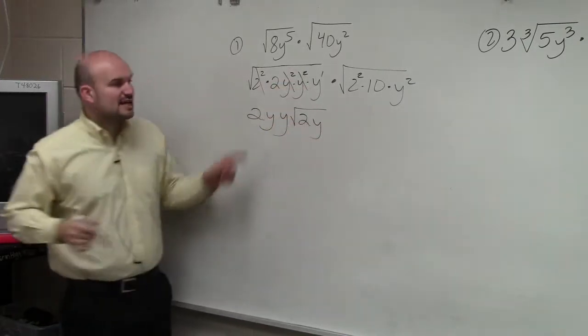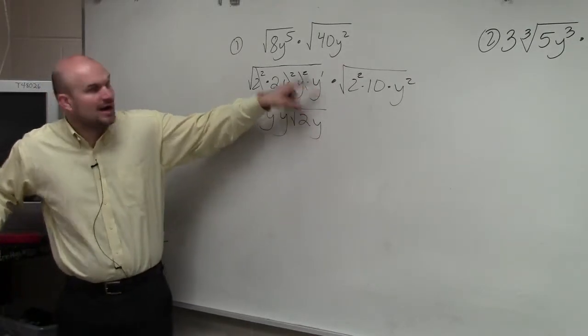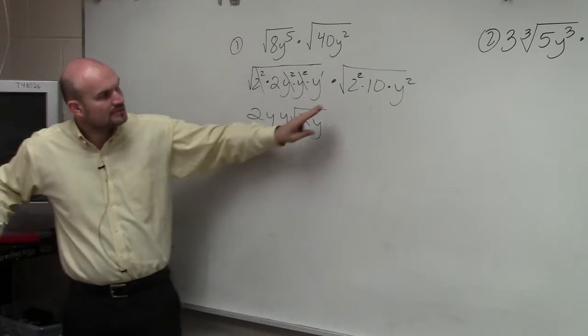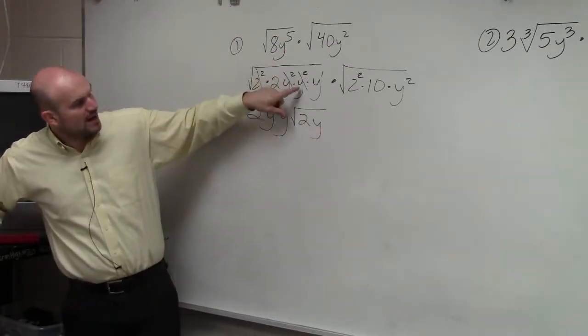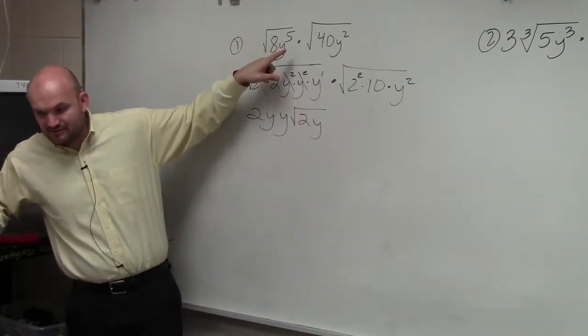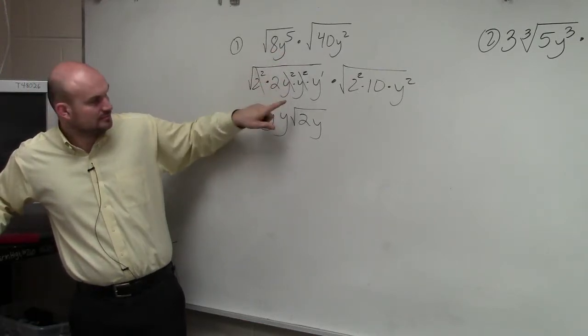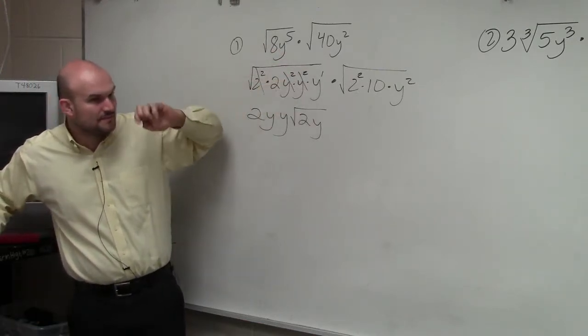Now, do you guys understand why I have y squared times y squared times y? That gives you y to the fifth, right? y squared times y squared times y is the same thing as y to the fifth. Because remember, when you multiply exponents, you add the powers. 2 plus 2 plus 1 is 5.